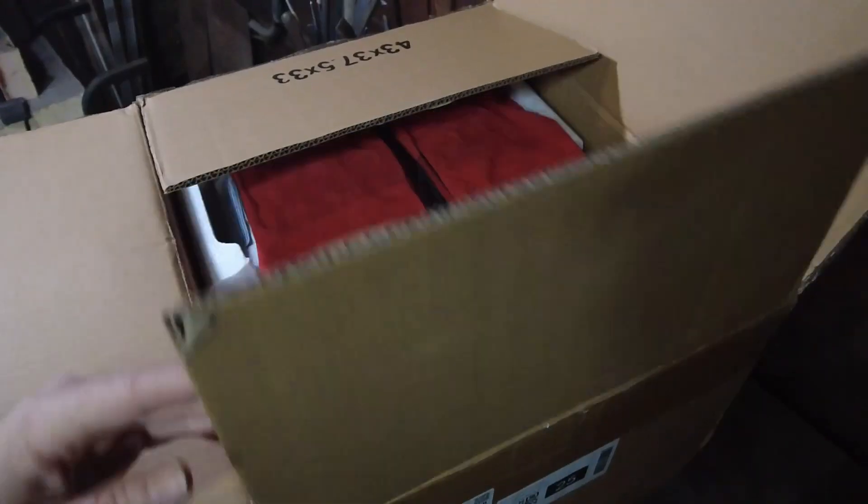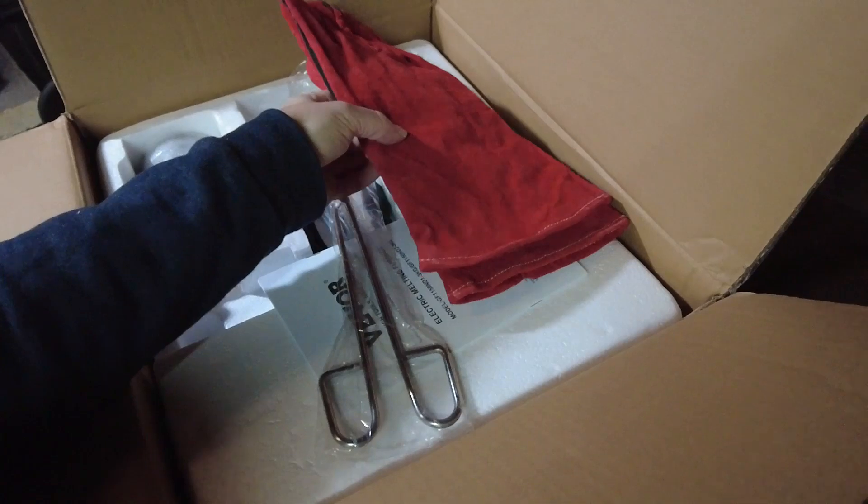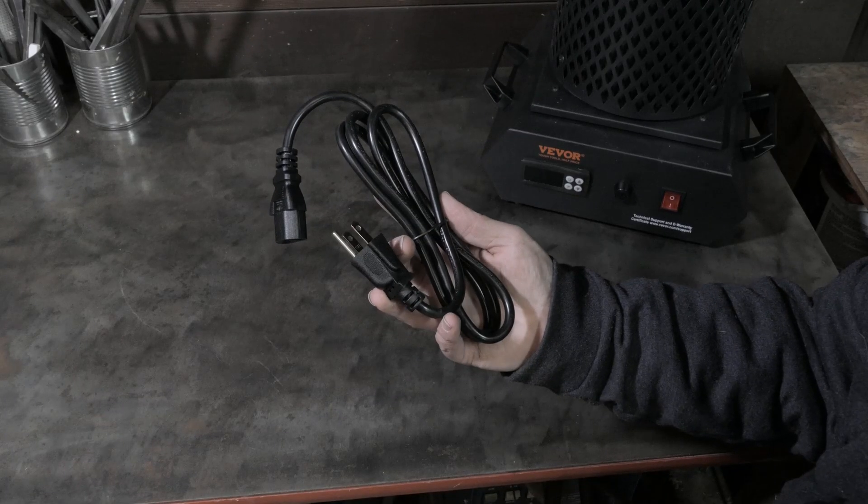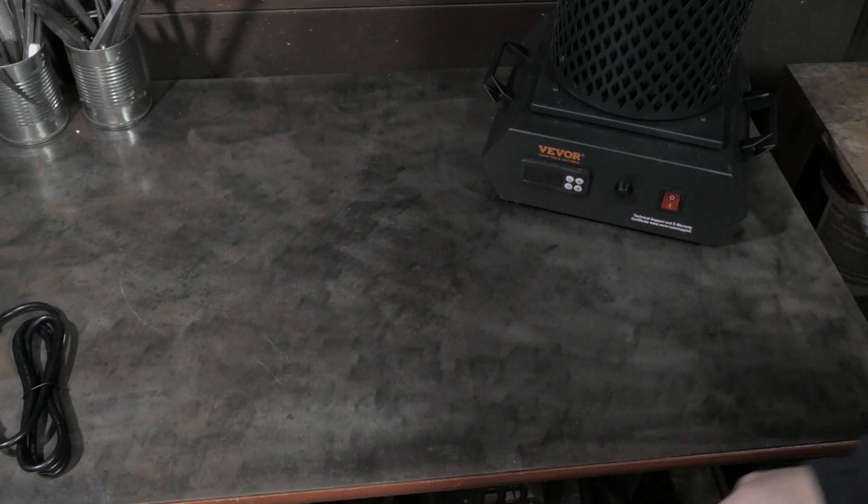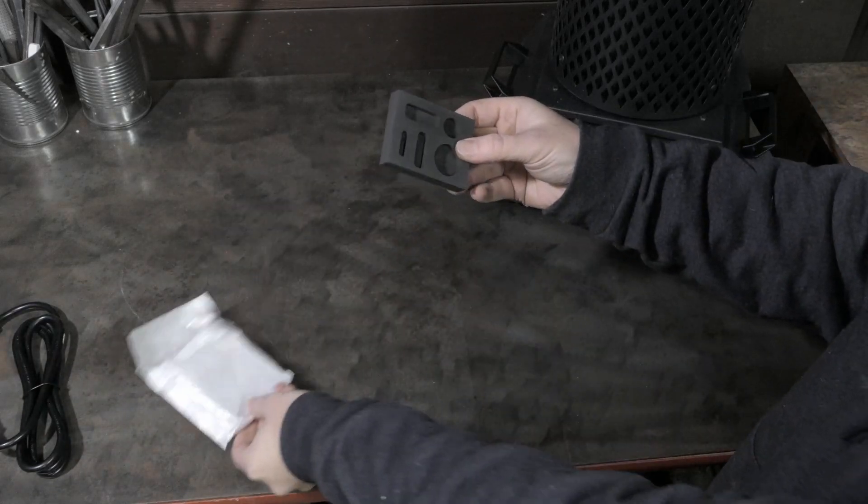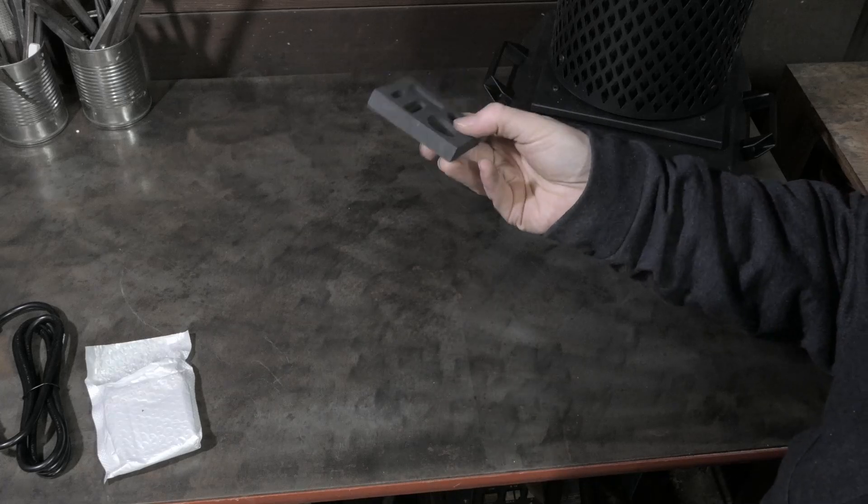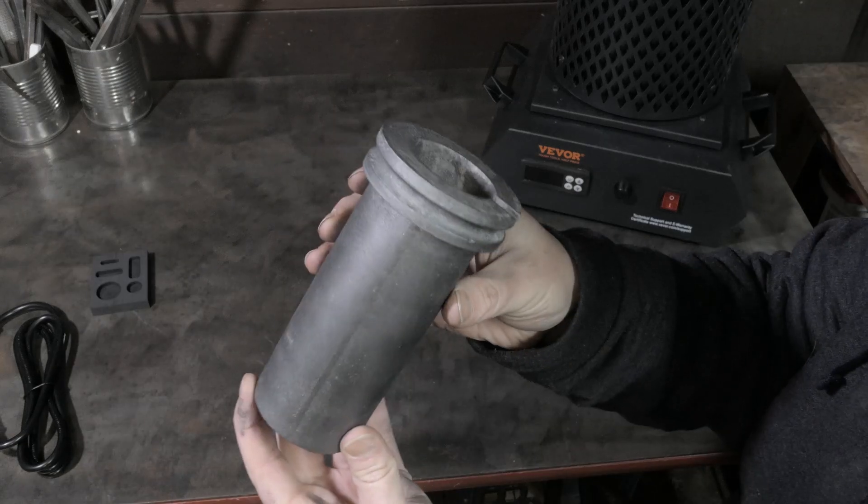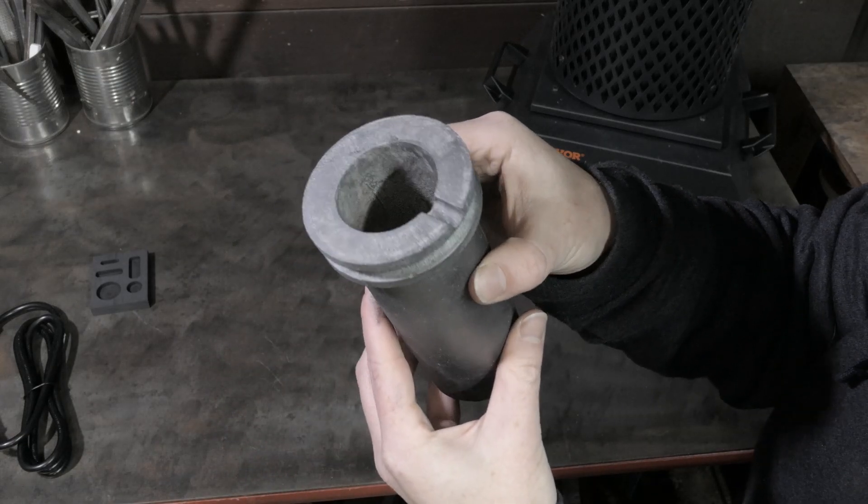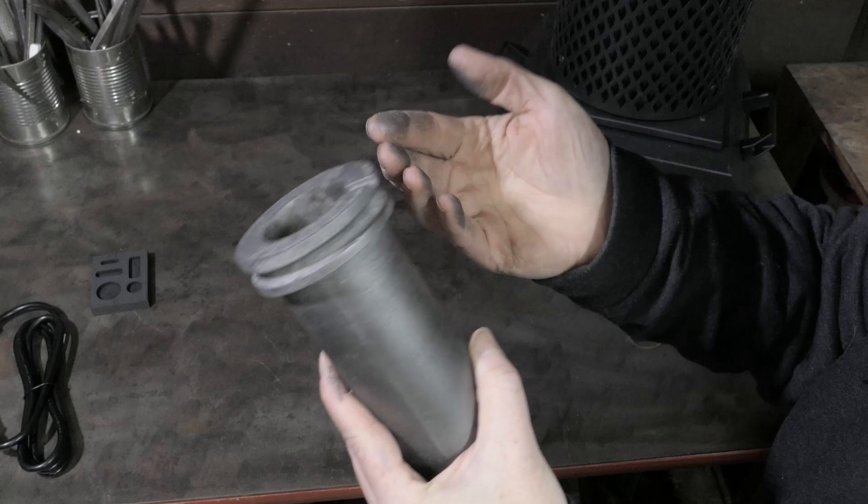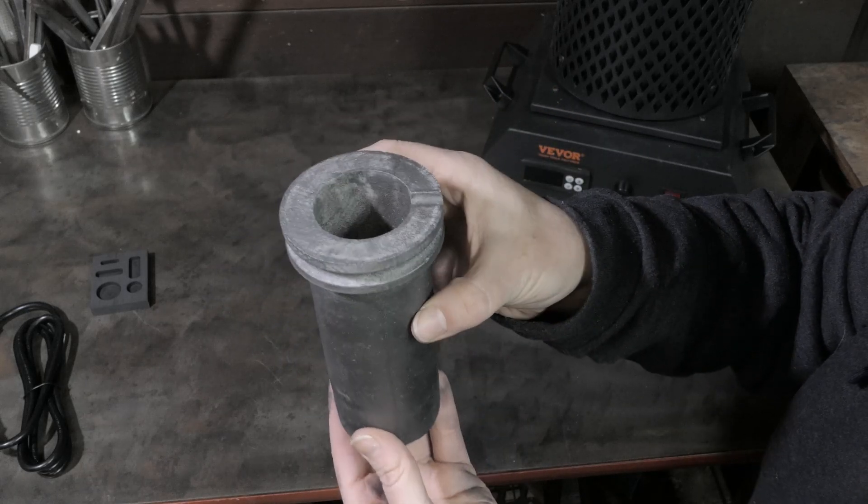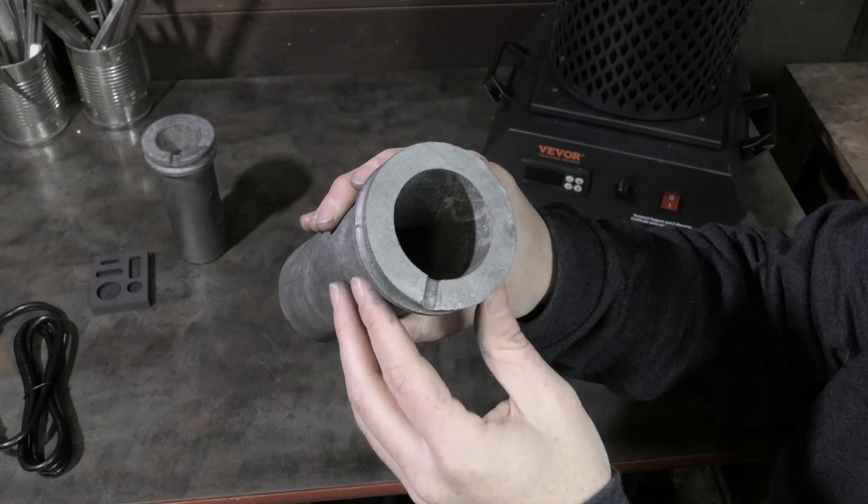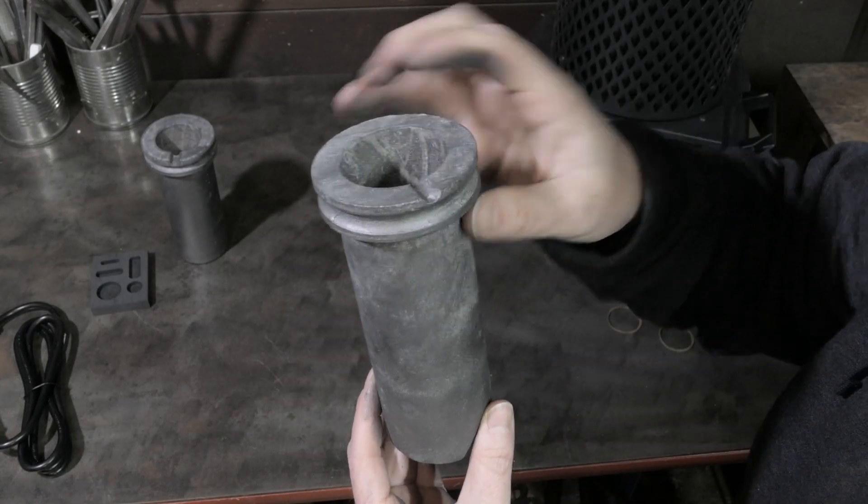Everything came really well packaged, which is nice because those graphite crucibles can tend to be pretty delicate. For everything included, you get the power cord, which this unit runs on a regular 110 volt outlet, a small graphite casting mold, a 1 kilogram graphite crucible, which actually seems like it might be bigger than one kilogram, but no complaints there. You also get a 3 kilogram graphite crucible, and both of them have that groove at the top to help with pouring the metal.